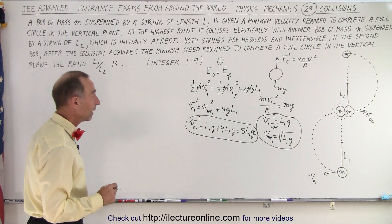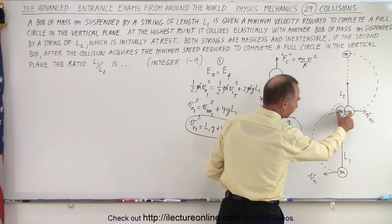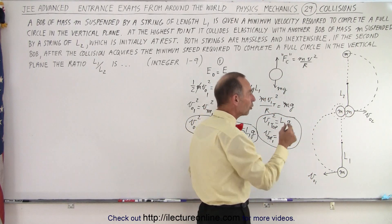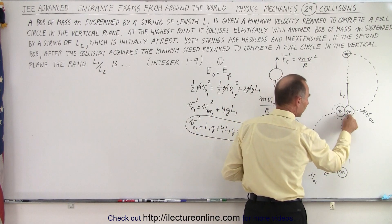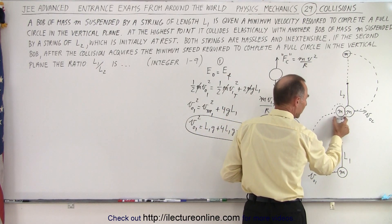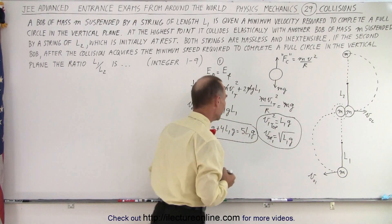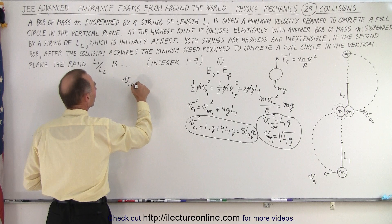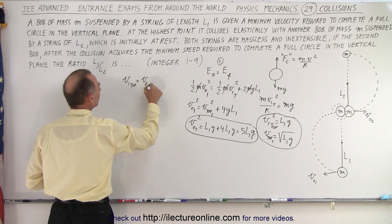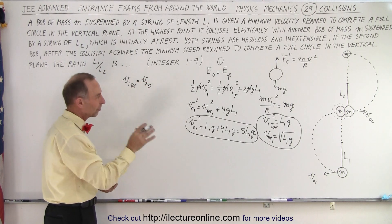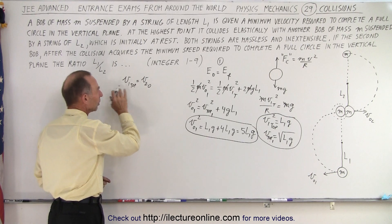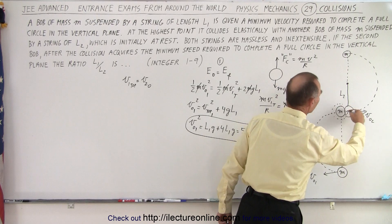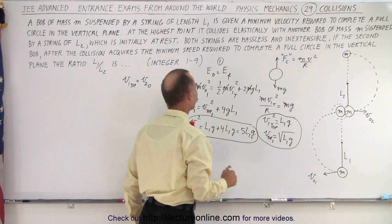Now there is an elastic collision, and energy is conserved. All the energy of the first bob transfers to the second bob, so the velocity of the first bob at the top must equal the initial velocity of the second bob: v1_top = v2_initial.